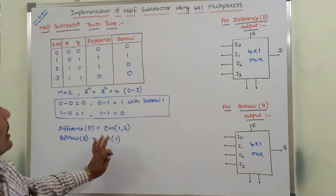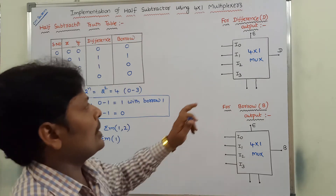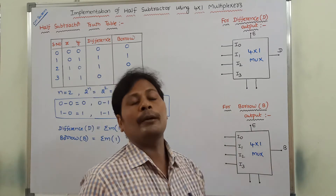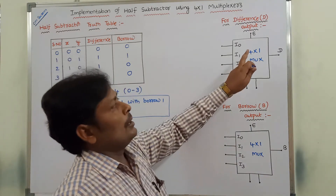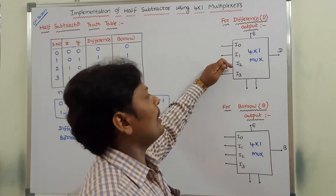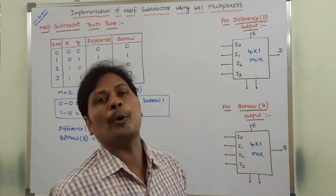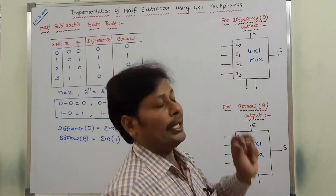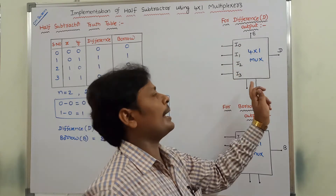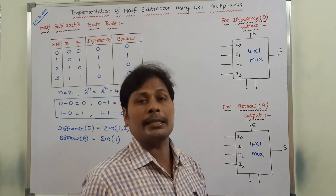This half subtractor truth table can be implemented by using 4 by 1 multiplexer. This is the 4 by 1 multiplexer for difference output and this is the 4 by 1 multiplexer for borrow output. As the name implies, 4 by 1 multiplexer can take 4 inputs: I0, I1, I2, and I3 — and one output D. Hence the name 4 by 1 multiplexer. There is also an enable input E, which is a control input that controls the entire operation of the multiplexer. If E value is equal to 0, the multiplexer does not perform its operation.